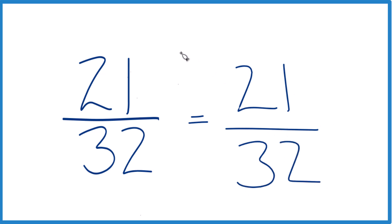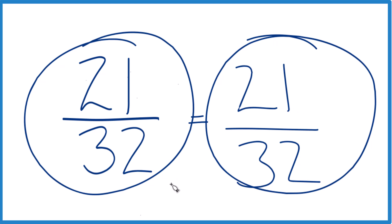What this tells us is that the fraction 21/32 is already simplified. We can't reduce it any further. And that's because the only common factor, the only number that goes into 21 and 32 evenly, is 1. So it's already simplified.